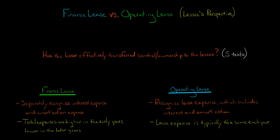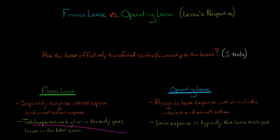With a finance lease, the total expenses will typically be higher in the early years of the lease because the lease liability is higher then, resulting in higher interest. Amortization is done on a straight-line basis, so it's usually the same each year. Combining higher early-period interest with straight-line amortization means total expenses are higher in the early years and lower later in the lease term.